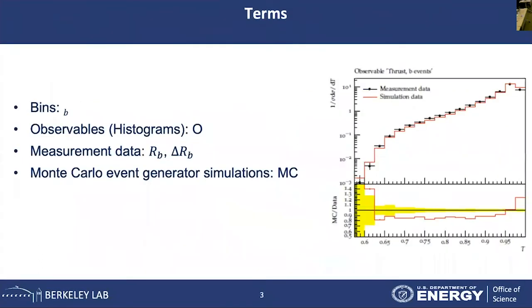Let me explain some of the terms involved. The atomic object of interest is called the bins, and we use the subscript B to denote the bin. The logical groupings of bins is called a histogram, which is basically a representation of the observables, denoted as big O. In the picture, this histogram is the representation of an observable with many bins.